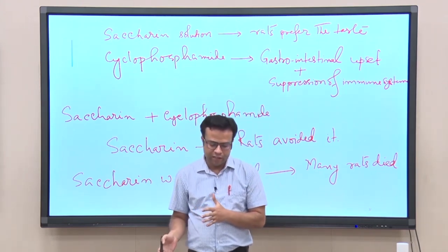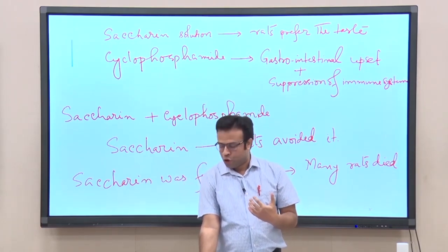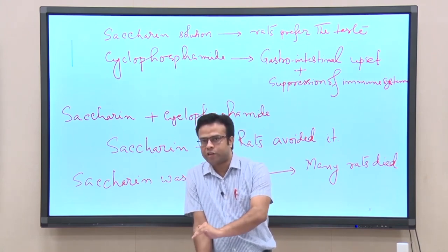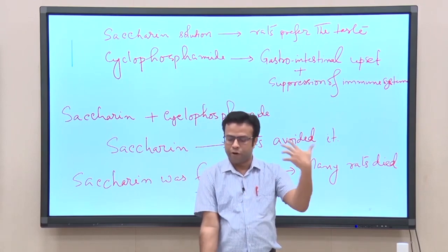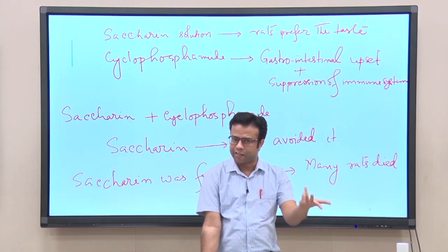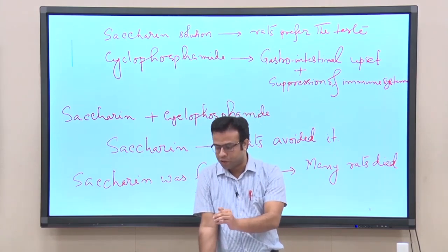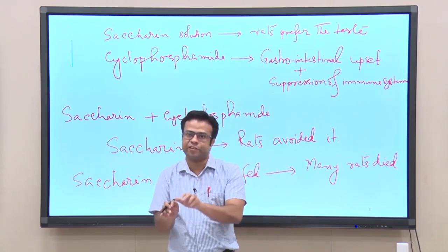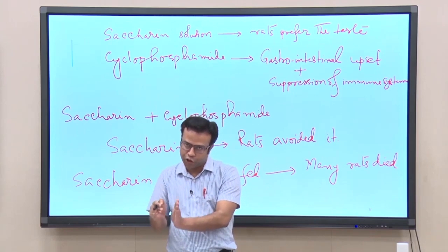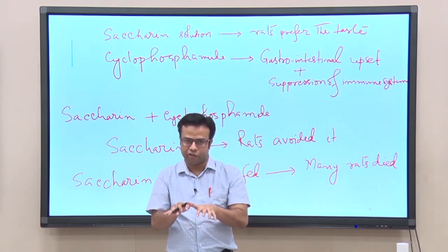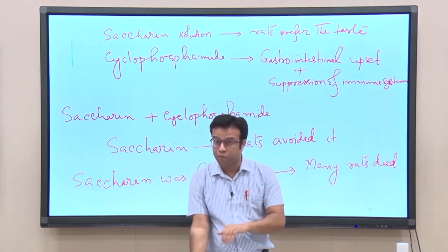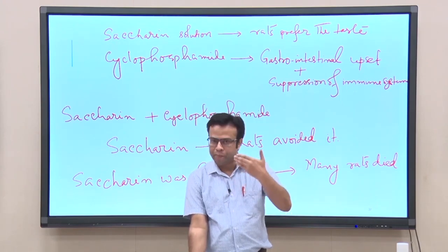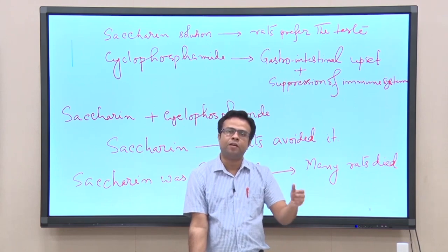This was kind of an unusual finding — just by feeding saccharine, how could a rat die? To complete the experimental protocol, the researcher force-fed the rats the saccharine solution using a dropper. The rats had learned to avoid it, but the researcher still forced it on them. Interestingly, many rats actually died after this force-feeding. The death rate was dependent on the amount of solution given — the higher the amount, the higher the death rate.